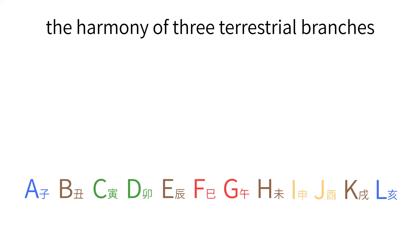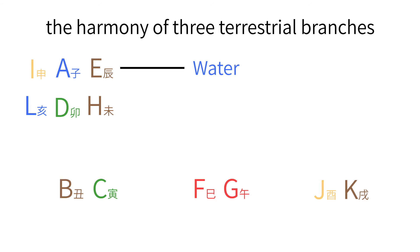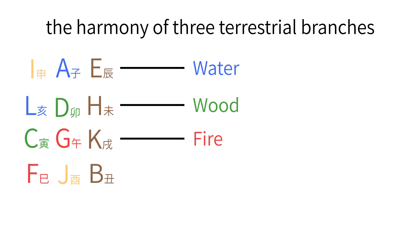Every three terrestrial branches also have a harmonious relationship, and the combination transforms into another element. I, A, and E have a harmonious relationship and together transform into water. L, D, and H transform into wood. C, G, and K transform into fire. F, J, and B transform into metal.